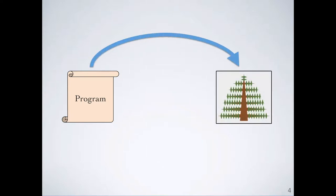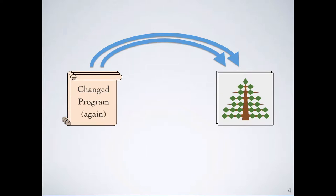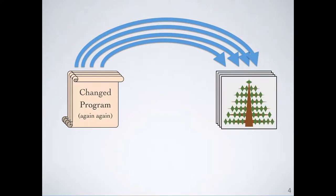You know how it goes. You run the code, and it doesn't work quite right. So you go back and you tweak a number in the code, and you run the program again. It's still not quite right, so you change the number and run it again, and... Is there a better way?